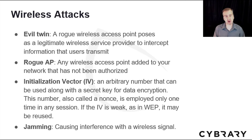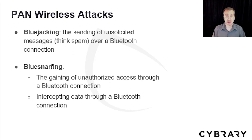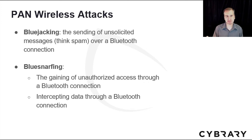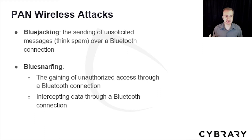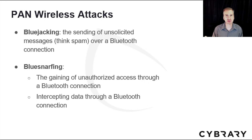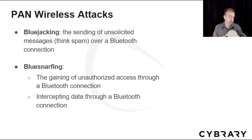Jamming is another form of wireless attack where you cause interference with a wireless signal, preventing others from using a Wi-Fi service. Not only are there attacks against IP wireless networks, but also personal area networks using Bluetooth. Bluejacking involves sending unsolicited messages, like spam, over a Bluetooth connection — for example, receiving Bluetooth spam on your watch. Bluesnarfing is gaining unauthorized access and intercepting data through a Bluetooth connection, such as reading messages or activity data from a wearable device.